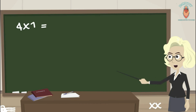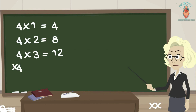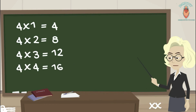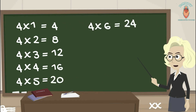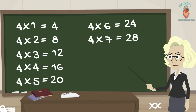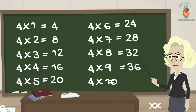4 1s are 4, 4 2s are 8, 4 3s are 12, 4 4s are 16, 4 5s are 20, 4 6s are 24, 4 7s are 28, 4 8s are 32, 4 9s are 36, 4 10s are 40.